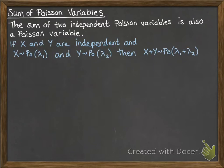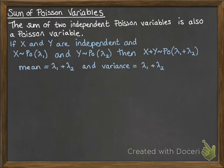So if x and y are independent, and x follows a Poisson distribution with mean lambda 1, and y follows a Poisson distribution with mean lambda 2, then x plus y will also follow a Poisson distribution with mean lambda 1 plus lambda 2. Bear in mind that the mean of x plus y is equal to the variance, so both the mean and variance equal lambda 1 plus lambda 2.